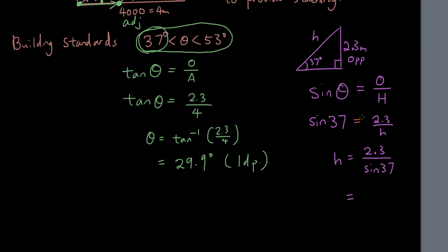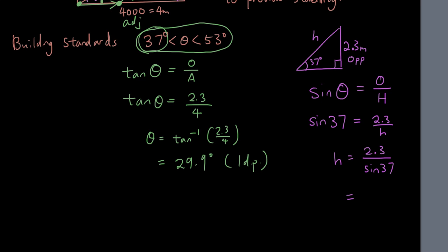If you're not sure how to rearrange it, feel free to look up my trigonometry videos. But now I'm going to type that into the calculator. 2.3 over bracket sine 37. And we get 3.82 meters.